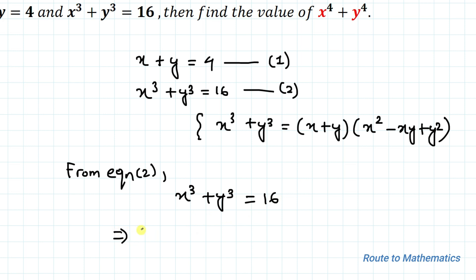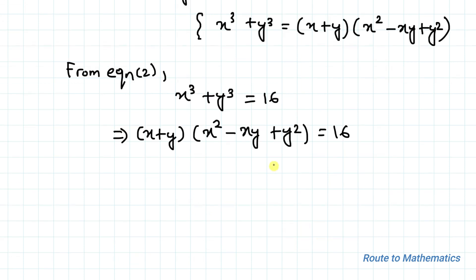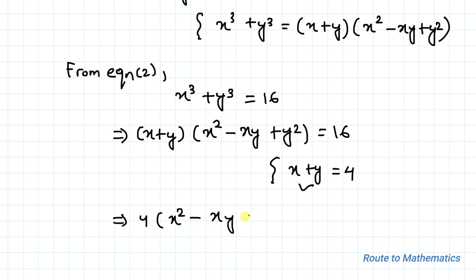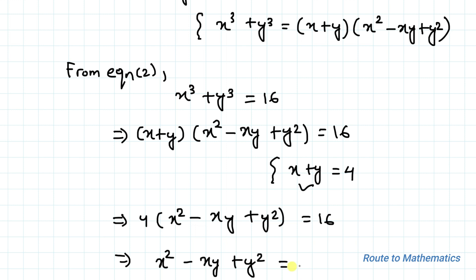We know the algebraic identity: x cubed plus y cubed equals x plus y multiplied with x squared minus xy plus y squared. Applying this identity in equation 2, and substituting x plus y equals 4 from equation 1, we get 4 multiplied with x squared minus xy plus y squared equals 16. Dividing both sides by 4, we get x squared minus xy plus y squared equals 4. Let's take this as equation 3.